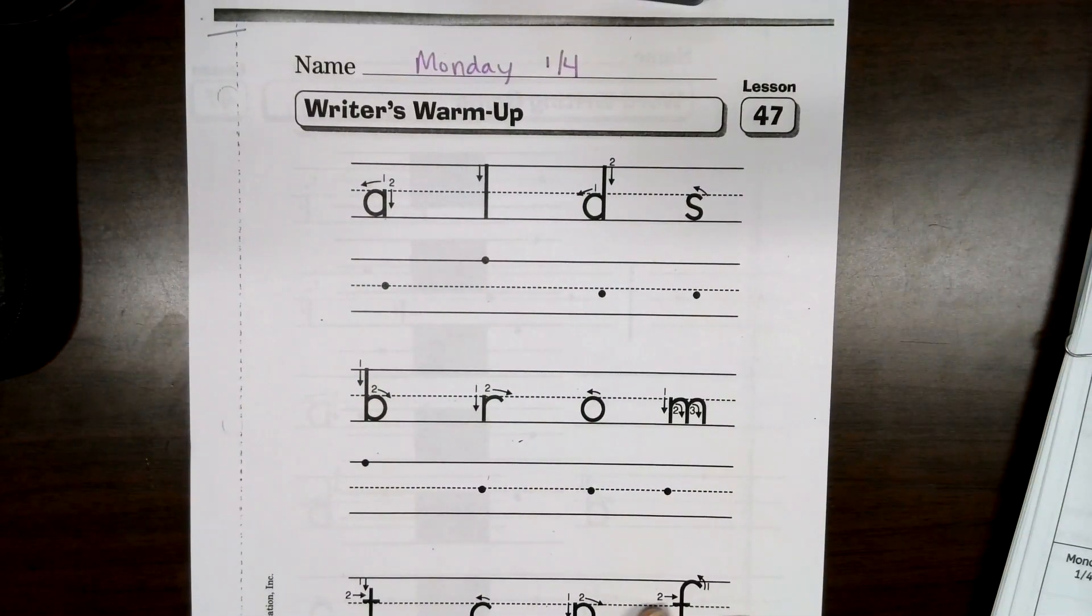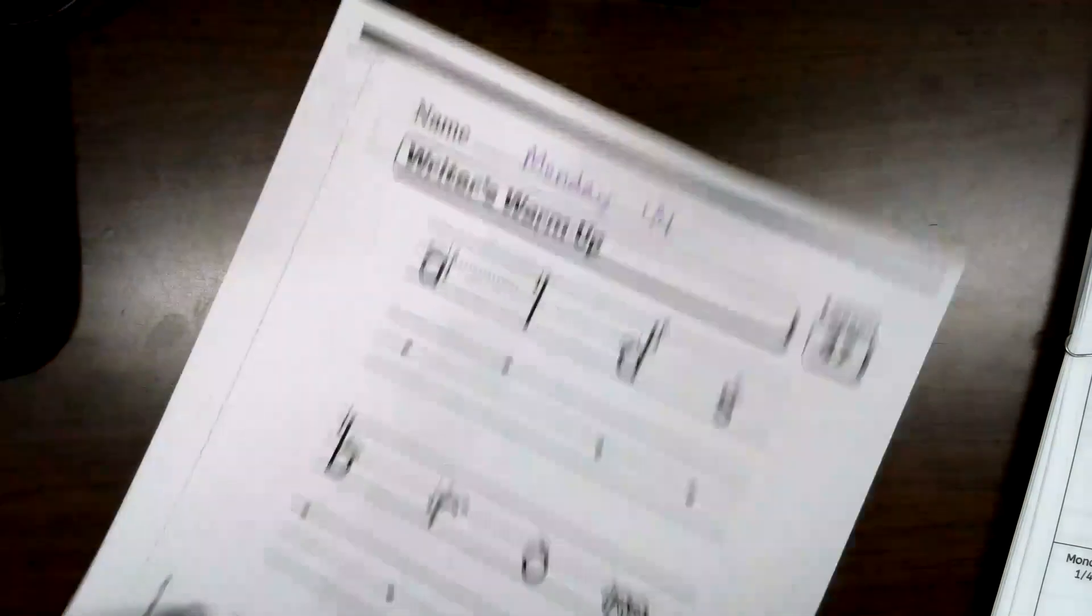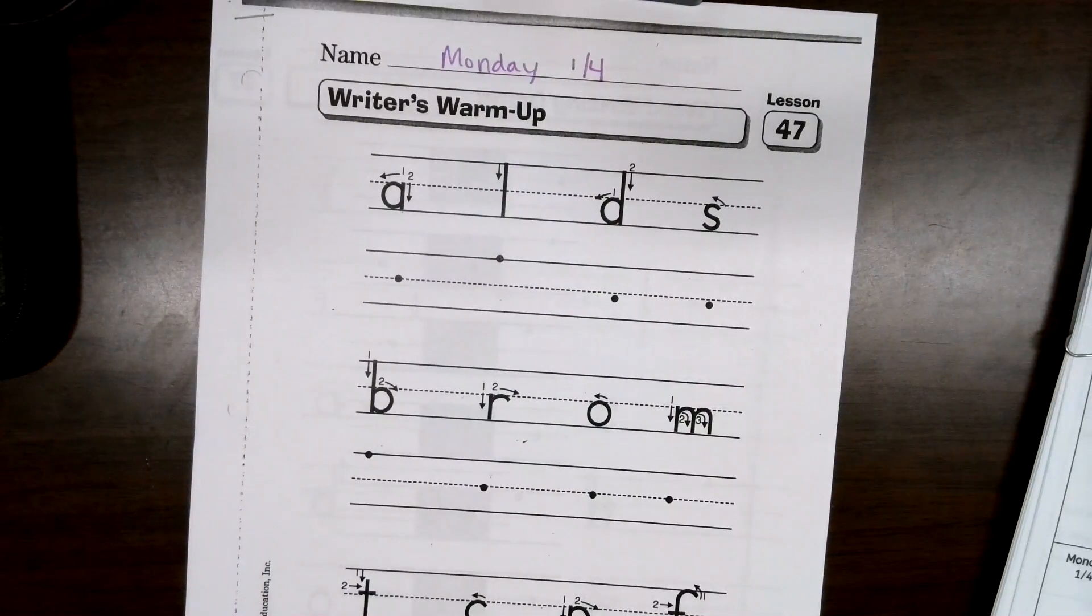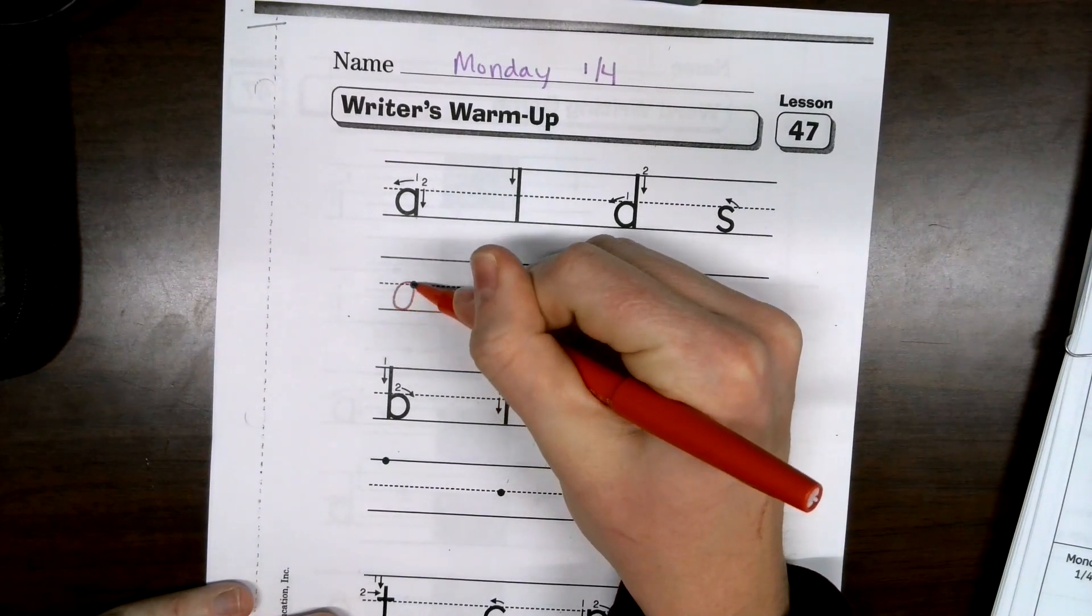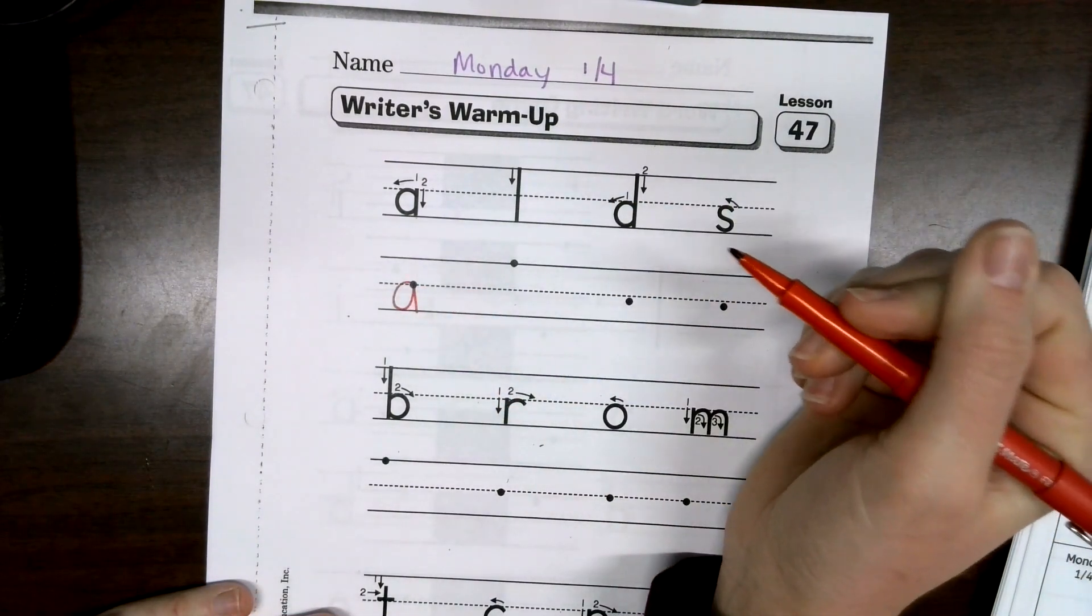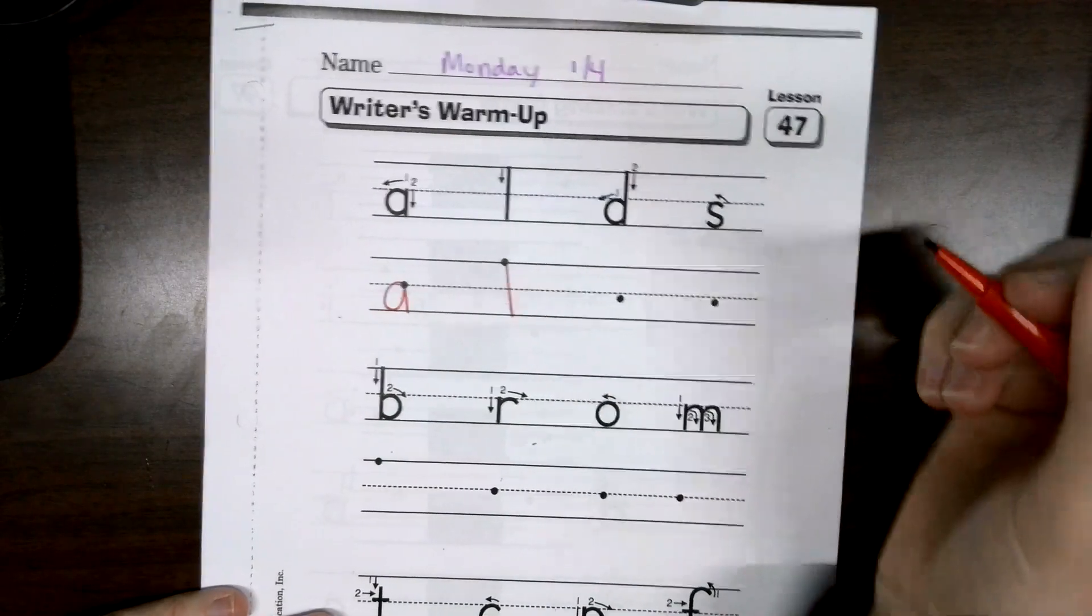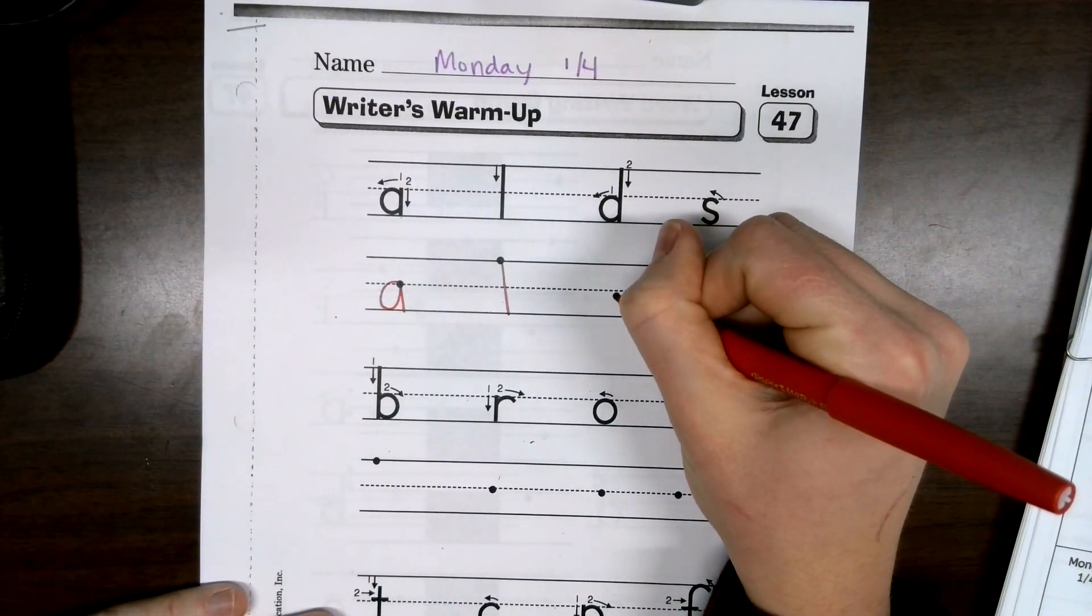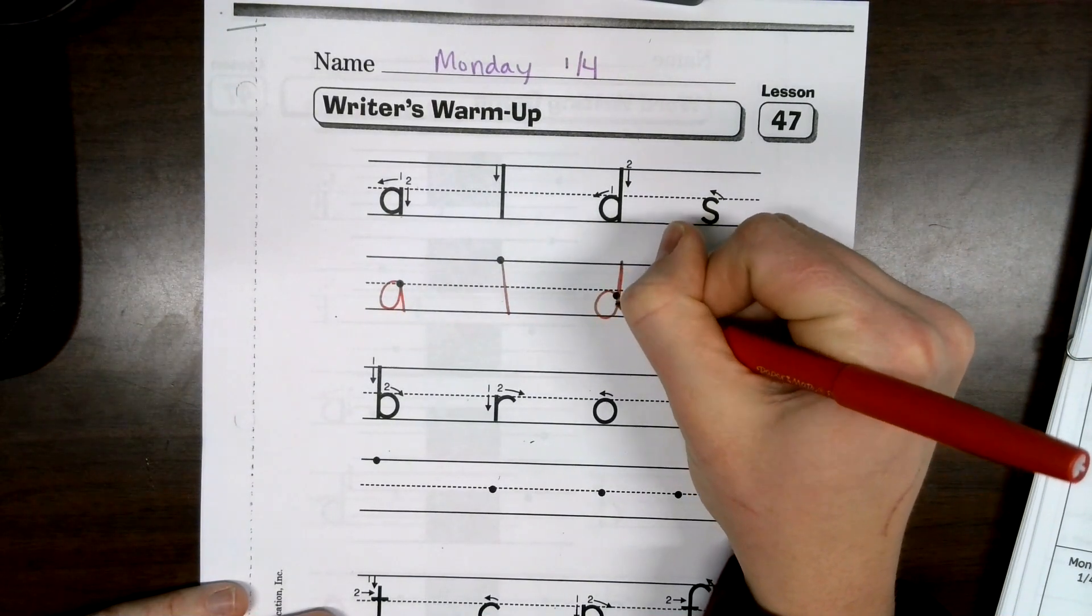Start at the middle. Our last page of work for today is our handwriting practice. So, our letter A. Remember to start at that middle dot, come around, meet back up, and come straight down. Those are just a line. D's, start at the middle, coming around, going straight up. A's, straight back down.